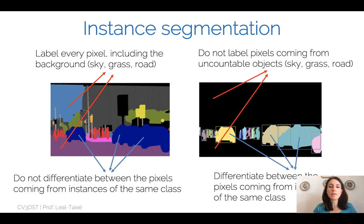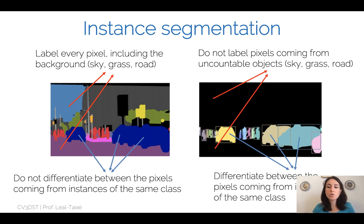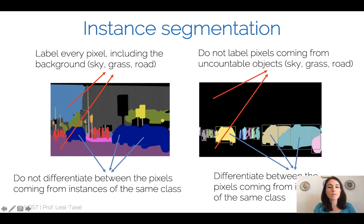For the task of instance segmentation we want to go one step further. We don't focus on labeling pixels from uncountable objects like sky, grass, or road. We focus only on segmenting pixels coming from instances of countable classes — for example cars or people.